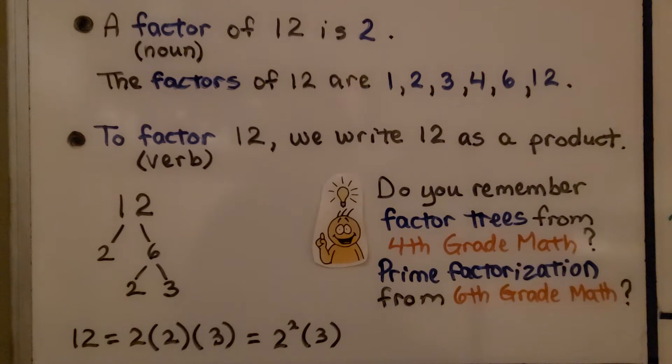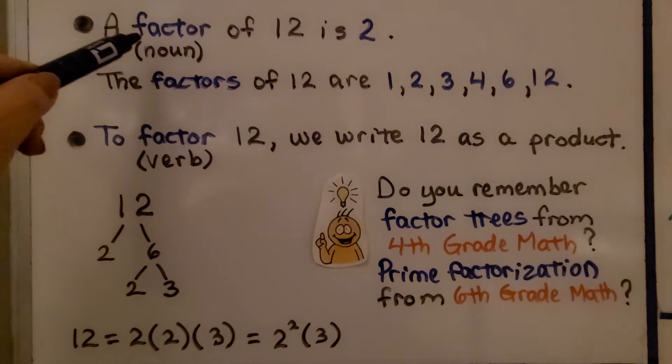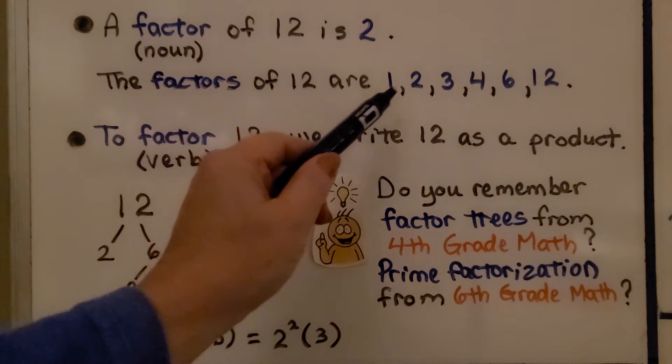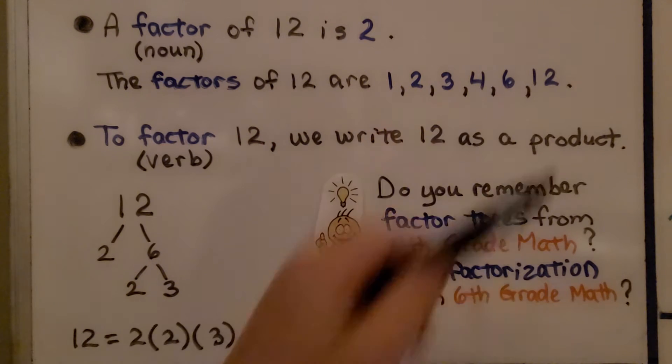A factor of 12 is 2. This is a noun. So the factors of 12 are 1, 2, 3, 4, 6, and 12.